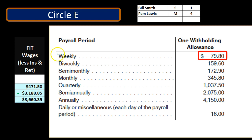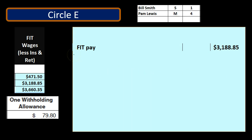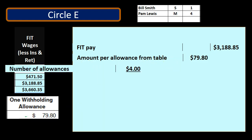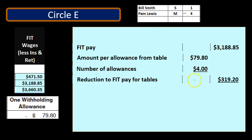First, we look at the Circular E table to find the allowance amount for a weekly pay period, which is $79.80 per allowance. We then take our FIT wages of $3,188.85 and calculate the allowances: $79.80 times four allowances equals $319.20. Subtracting that from the FIT wages — $3,188.85 minus $319.20 — gives us $2,869.65. This is the number we'll use for the percentage table calculation.